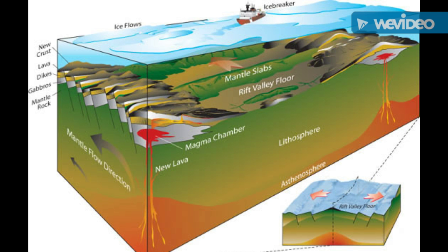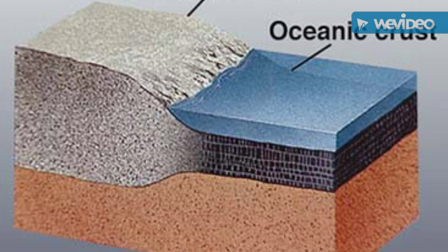The continental crust is about 35 kilometers thick, and the ocean floors are about 7 kilometers thick. The mantle is a solid casing of the Earth, and it's about 2,900 kilometers thick. It makes up about 70% of the Earth's mass.